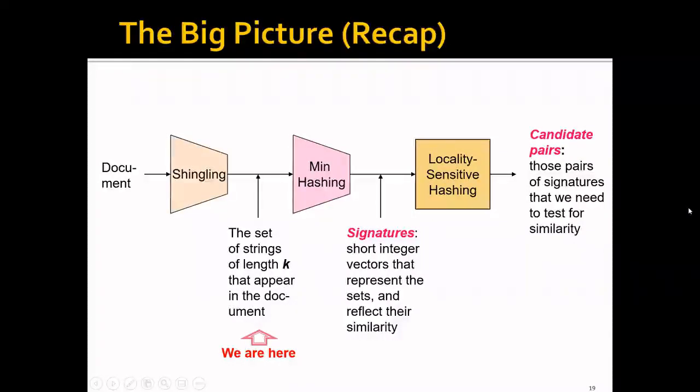If you remember our big picture, we're currently here. We have represented documents as shingles, and more specifically, high-dimensional binary vectors. And next, we will go through the minhash method and the LSH method.